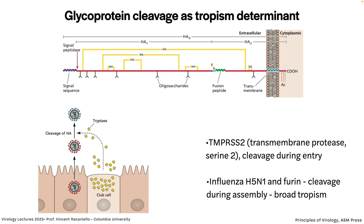Here's an example: glycoprotein cleavage. The influenza virus hemagglutinin must be cleaved to expose the fusion peptide. If the HA is not cleaved, the virus will not infect cells. The protease that does that cleavage is largely restricted to the respiratory tract — that's why influenza in humans is mainly a respiratory disease. If the virus reaches other tissues, it won't reproduce because there is no protease to cleave the HA. This is a major determinant of tropism.